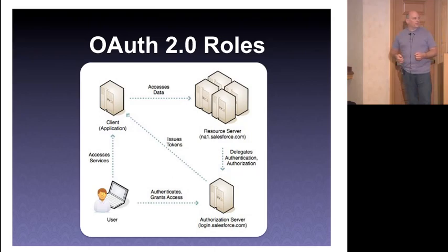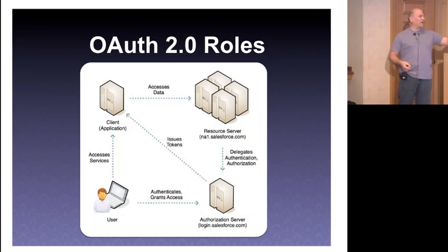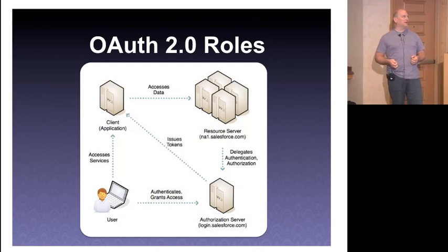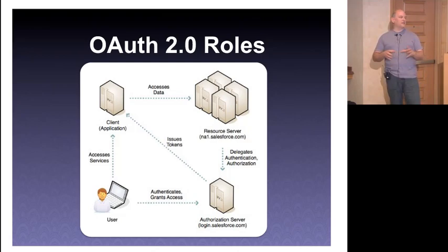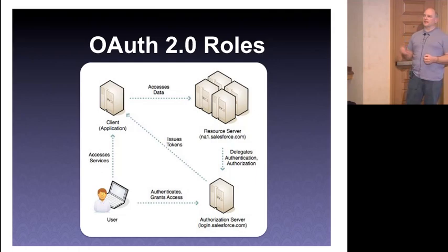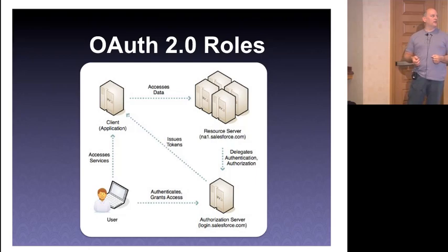Some OAuth jargon: the user is the user — easy enough. The application accessing the APIs is called the client. You have the resource server — that's where the stuff is that you want to get to, typically implementing the API. In our case that could be CRM data; in Facebook's case, that's the graph API. And then typically you have an authorization server separate from the resource server — the resource server trusts the authorization server to authenticate users, ask their permission, and issue tokens.